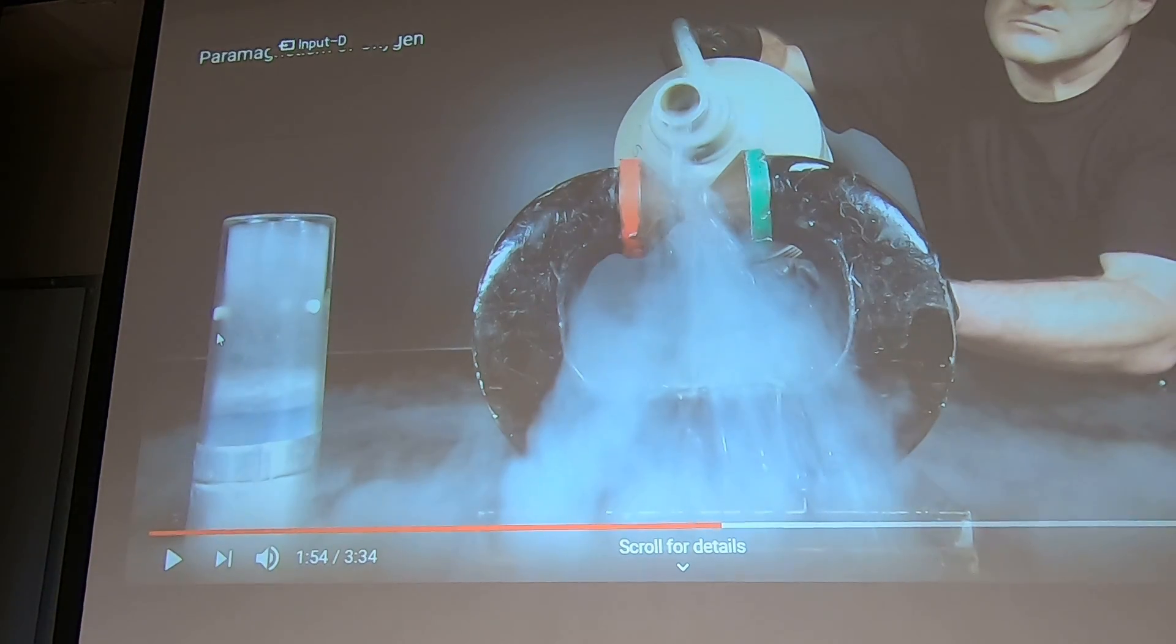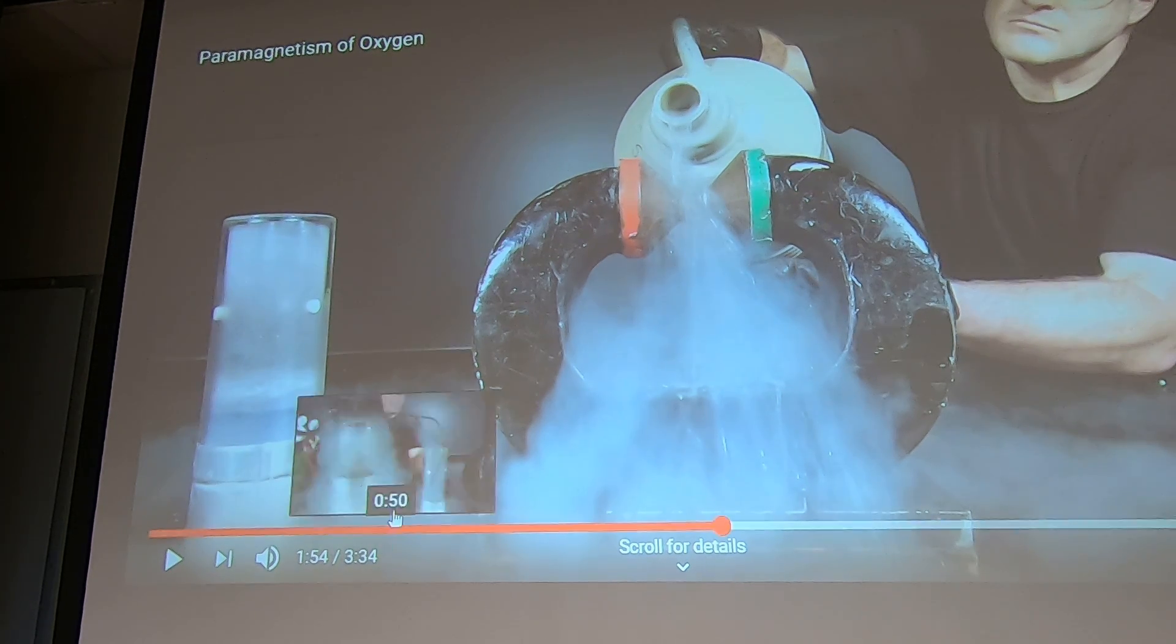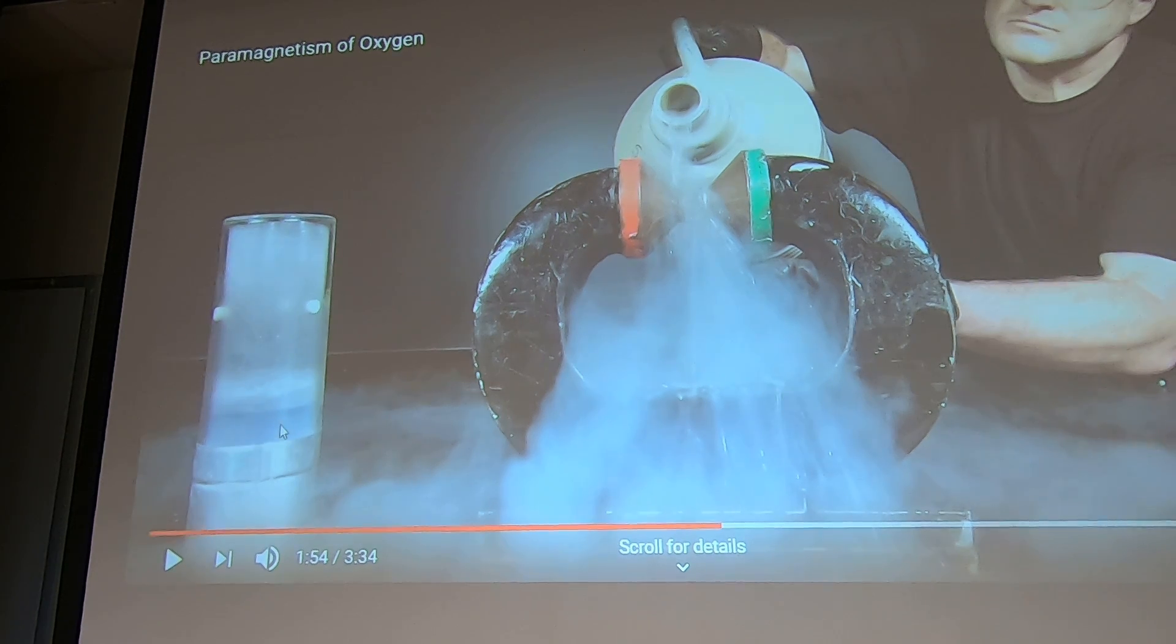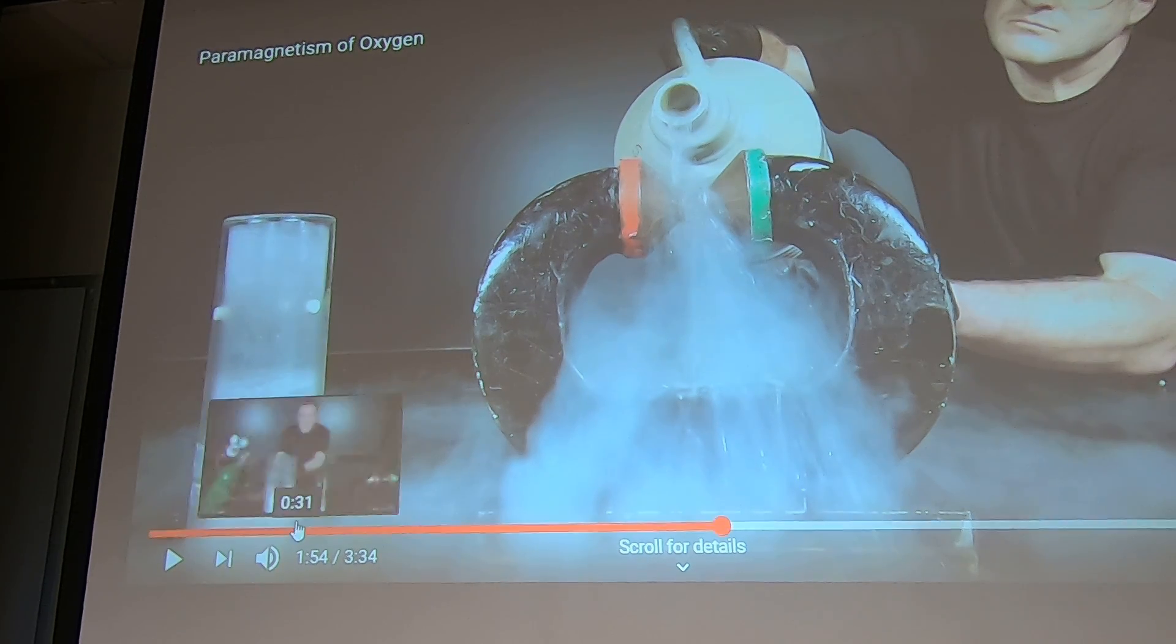This person is trying to condense liquid oxygen. Liquid oxygen can be condensed from liquid nitrogen. This is liquid oxygen straight from the bottle. This is liquid nitrogen. This is a big magnet. Nitrogen is diamagnetic. Let's see what happens when he pours the liquid oxygen.